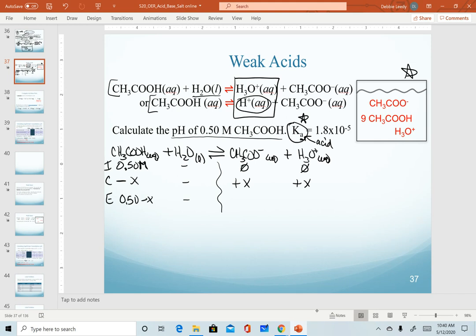On our equilibrium row, we just add the initial and change together. Our next step is now to write our equilibrium expression products over reactants. Coefficients would be the exponents, but everything is just a one. And then we plug in our equilibrium values. And we can set that equal to our given Ka value.